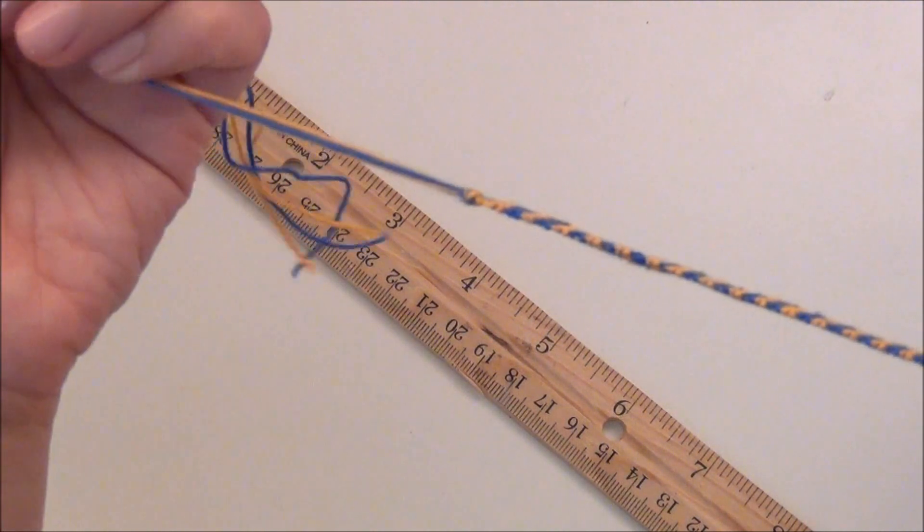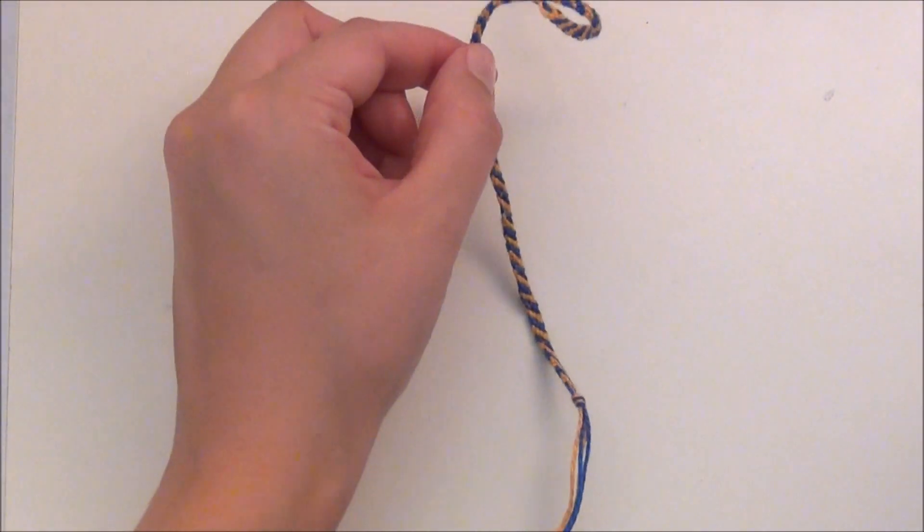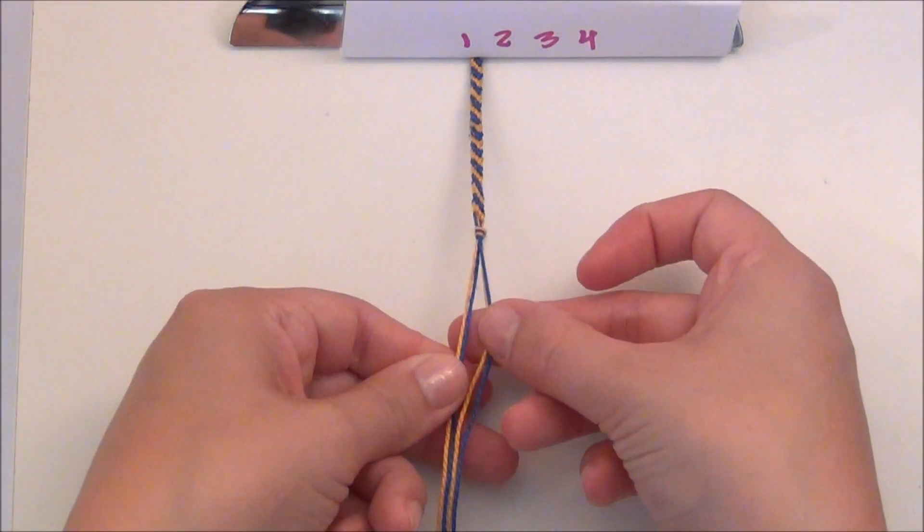Now that I have the knot on the end of that one, I'll just clip it back under the clipboard and braid this end.